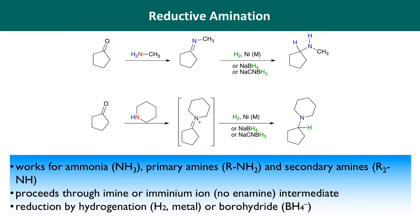Reductive amination is a two-step method for turning ketones and aldehydes into amines. In the example shown here, cyclohexanone is treated with methylamine, and under the right conditions—typically pH 4.0—we can form an imine, a mechanism we've already discussed. Once that imine forms, the pi bond can be reduced to get an amine as our final product. That reduction can happen a number of different ways.